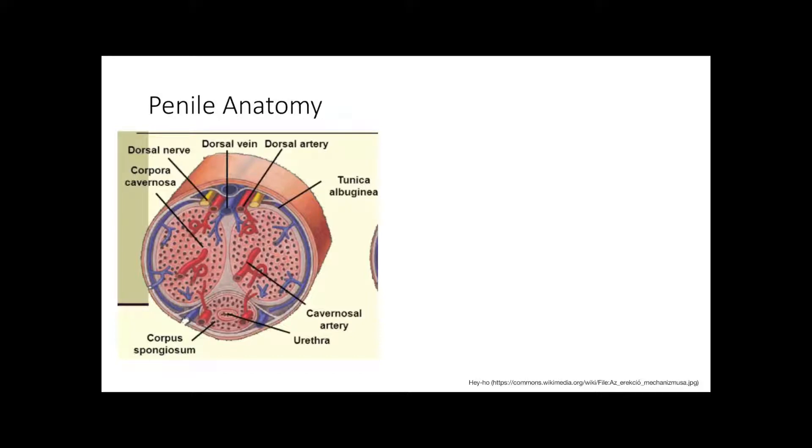Brief talk on penile anatomy as well as erections and ejaculations. We're going to focus on the corpus cavernosa, these two pink structures - basically spongy erectile tissue mainly responsible for getting an erection.